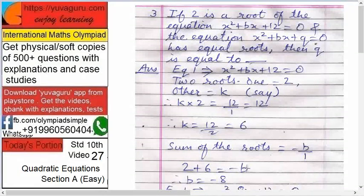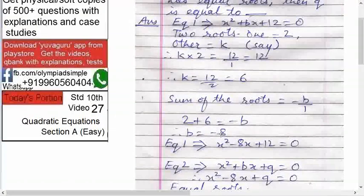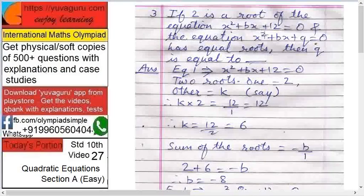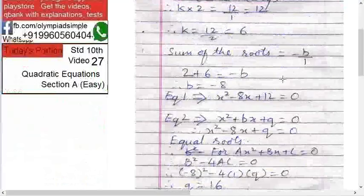So minus b equals to 8, b equals to minus 8. Now you have got b. Now come to the second equation. The first equation is x square minus 8x plus 12. That's what we have got. Now equation 2 is x square plus bx plus q equals to 0.